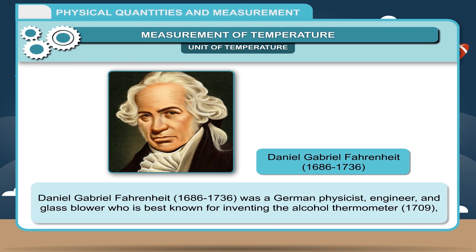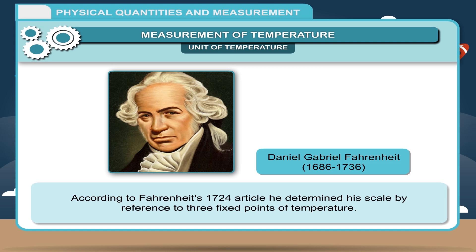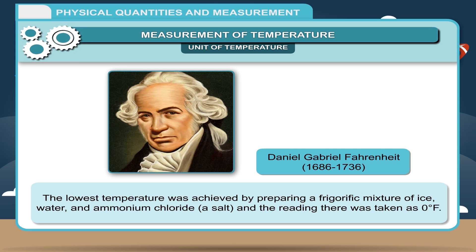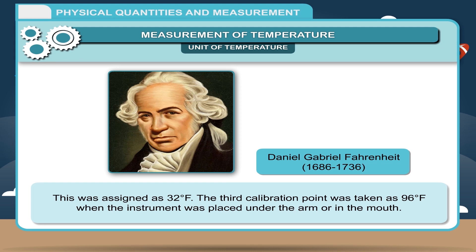Scientist Daniel Gabriel Fahrenheit, 1686 to 1736, was a German physicist, engineer and glass blower, best known for inventing the alcohol thermometer in 1709 and the mercury thermometer in 1714, and for developing the temperature scale named after him. According to his 1724 article, he determined the scale by reference to three fixed points: the lowest was a frigorific mixture of ice, water, and ammonium chloride, assigned 0 Fahrenheit; the second was the freezing point of water, assigned 32 degrees Fahrenheit; and the third was 96 degrees Fahrenheit, taken when the instrument was placed under the arm or in the mouth.